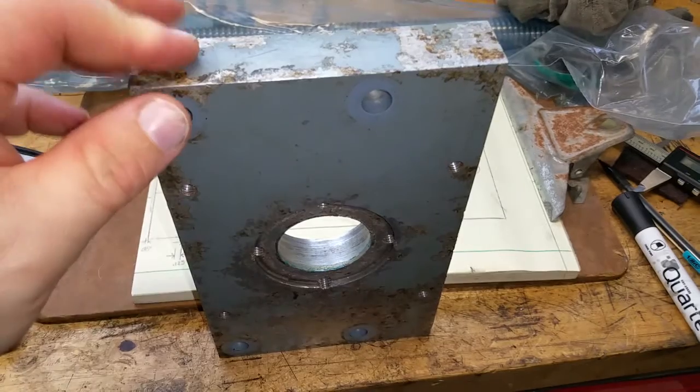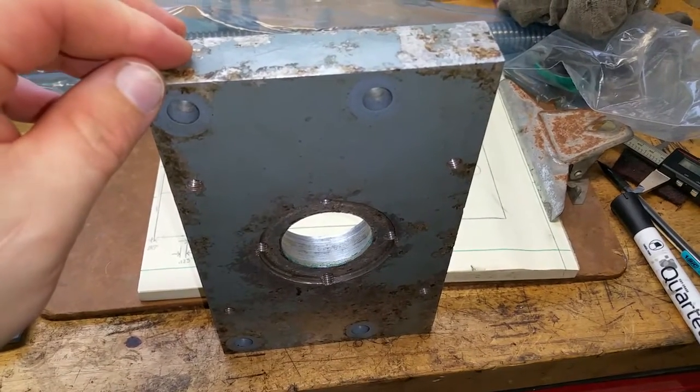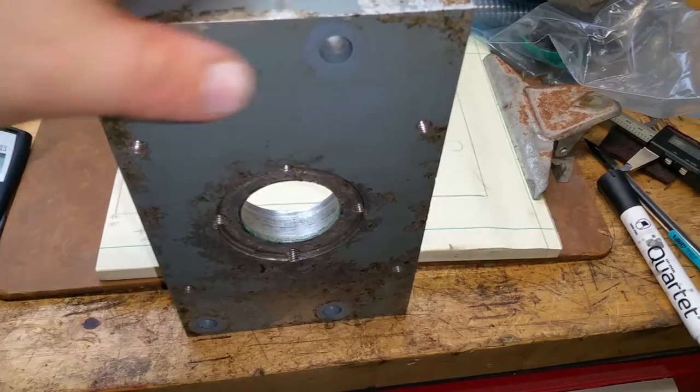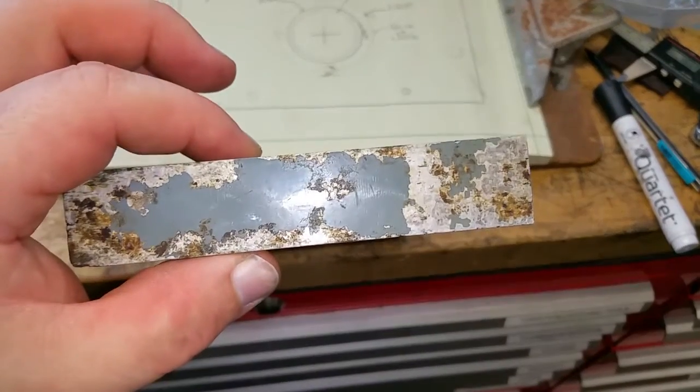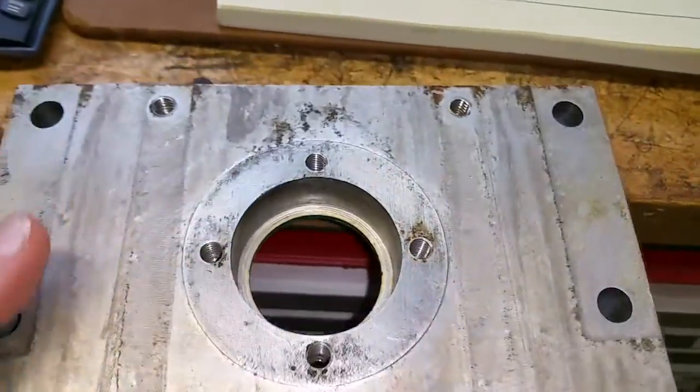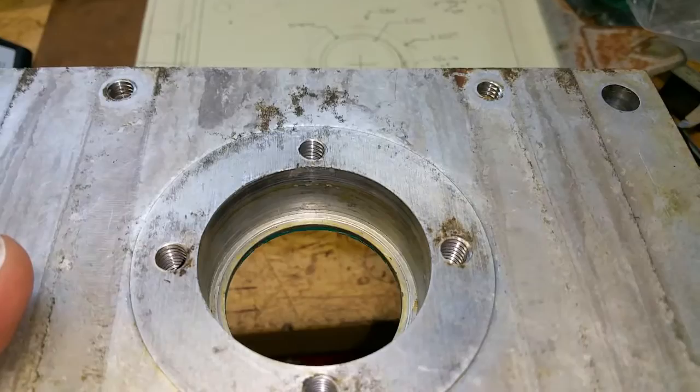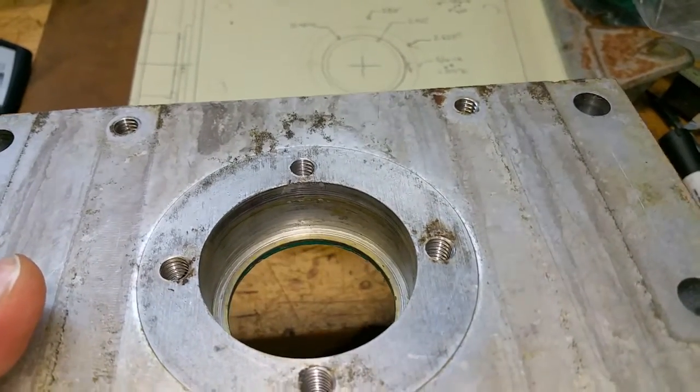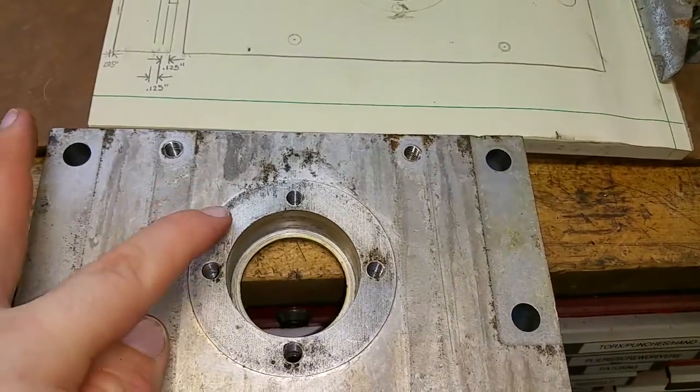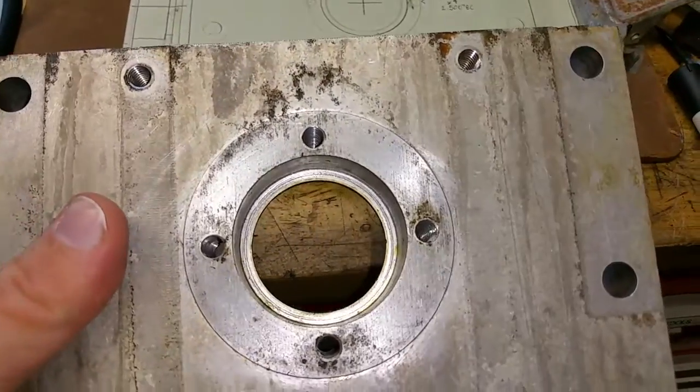This block is what transmits all of the thrust force of the ball screw into the casting of the machine. This block is made of aluminum. It's a pocket for a bearing. There is a corresponding bearing that bolts on to here. That's in another piece I'll show you later.